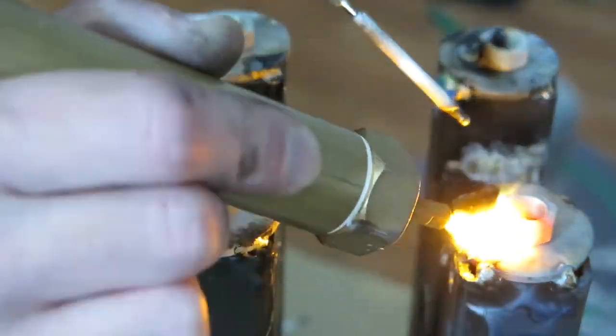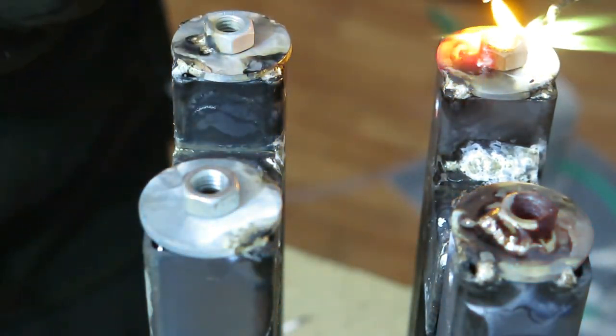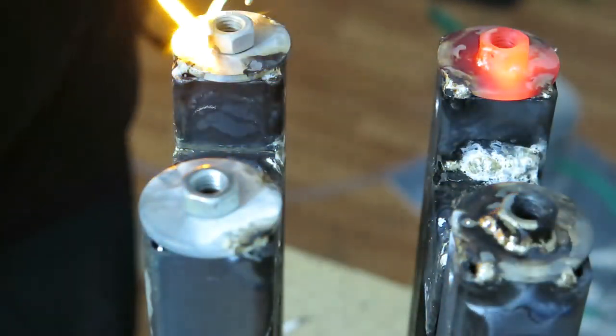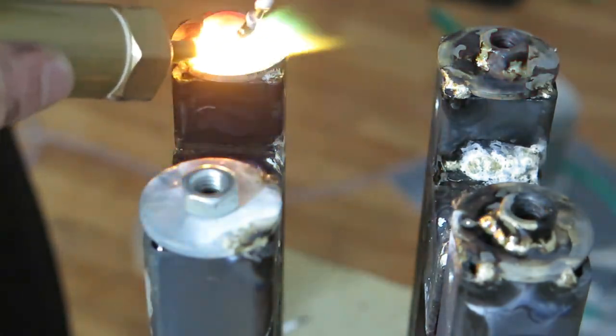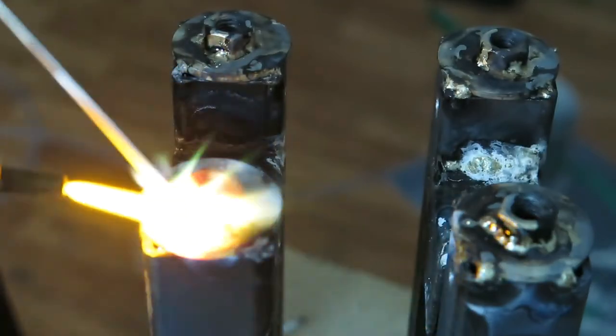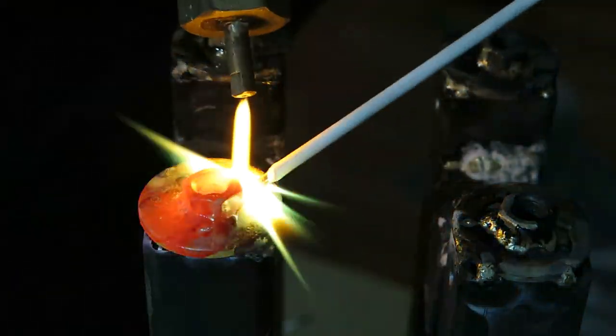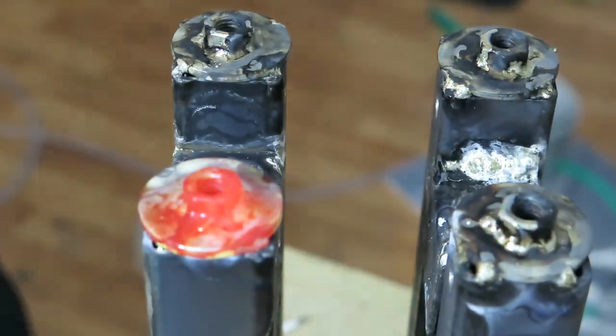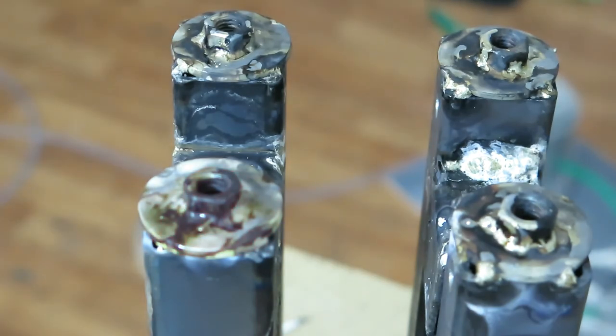Next thing to do will be cleaning up flux, painting, making hose connection parts and finalizing the cell modules.